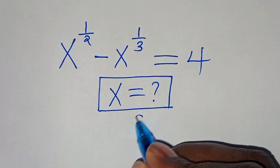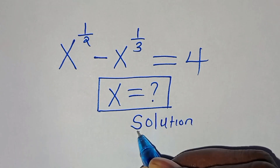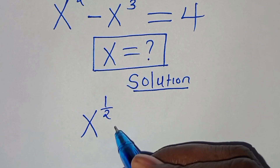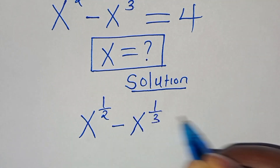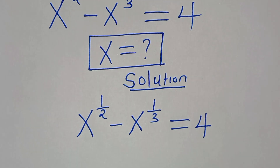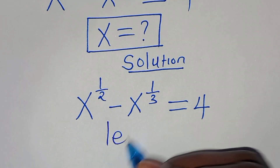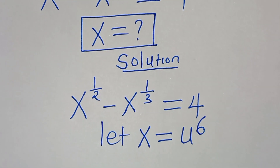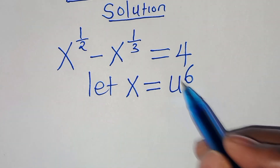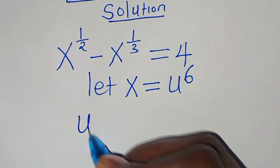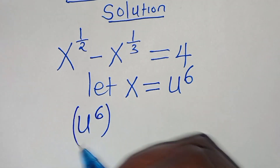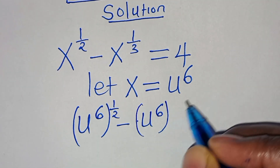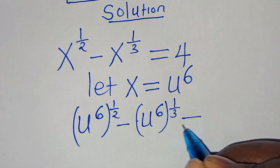Now let's provide a solution from here. We have x to the power of a half, subtract x to the power of 1 over 3, this is equal to 4. Now, we can let x be equal to u to the power of 6. So let's substitute u to the power of 6 here, so that we have u to the power of 6 raised to the power of a half, subtract u to the power of 6 raised to the power of a third. This is equal to 4.